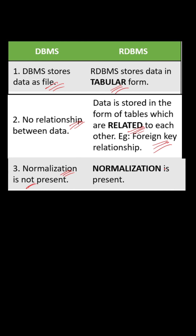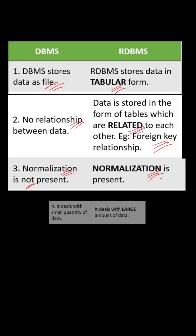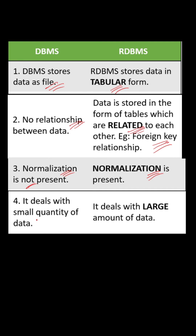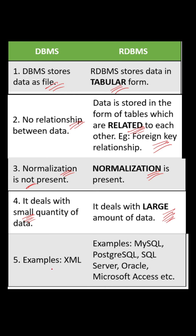In RDBMS, normalization is present. DBMS deals with small quantities of data, while RDBMS deals with large amounts of data. Examples of DBMS include XML. Examples of RDBMS include MySQL, SQL Server, and Oracle — all of these are relational database management systems.